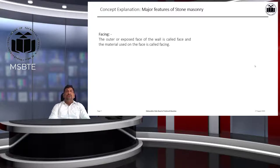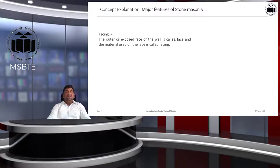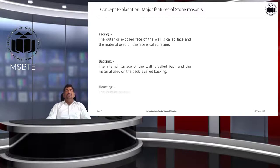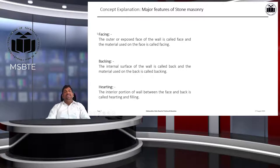Facing: the visible face of any wall is called the face, and the material used on this face is called the facing. Backing: the internal surface of the wall is called the back, and the material used on the back of the wall is called the backing.